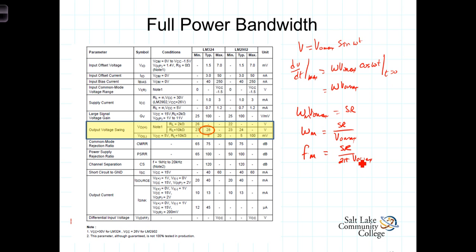So from this datasheet, we see that the rated voltage, the power supply voltages, are 30 volts, or it could also be ±15 volts, so maximum swing is going to be ±15 volts.